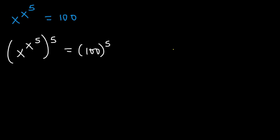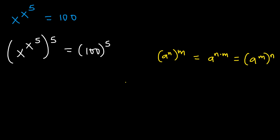From the rules of exponents, whenever you have a to the power of n raised to the power of m, this is the same as a raised to the power of n times m, which is also the same as a raised to the power of m and then to the power of n.